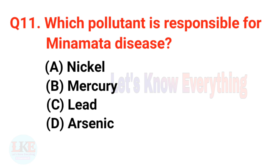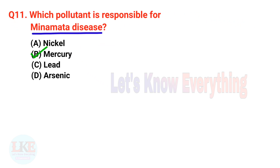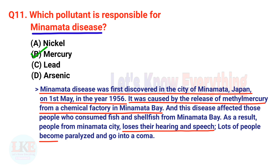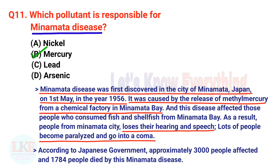Question number eleven: which pollutant causes Minamata disease? A) Nickel, B) Mercury, C) Lead, D) Arsenic. The right answer is option B, mercury. Minamata disease was first discovered in Minamata, Japan, on 1st May 1956. It was caused by the release of methylmercury from a chemical factory into Minamata Bay. People who consumed fish and shellfish from the bay lost their hearing and speech, became paralyzed, or went into a coma. Approximately 3,000 people were affected and 1,784 died.